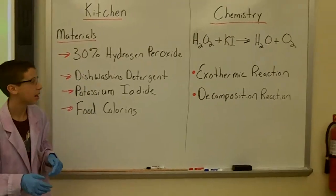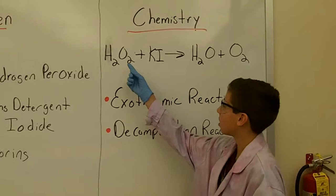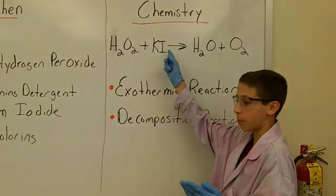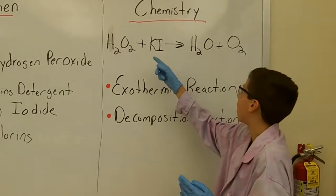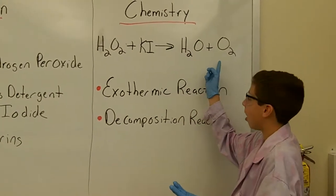And to move into the chemistry aspect of it, our formula is the hydrogen peroxide, which is chemical formula H2O2, plus our potassium iodine, which is KI, and this will transform into water and oxygen.